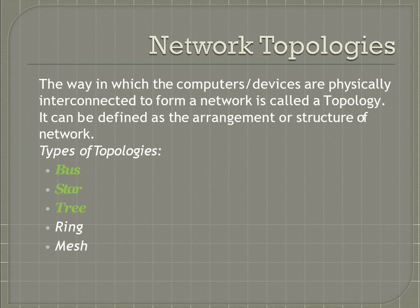The last factor is reliability. Reliability refers to the degree of trust that can be placed on a network. Like any other system, a network can also encounter failure — this can occur when an individual node stops working or when the entire network fails. Reliability is very important while selecting a topology.